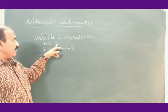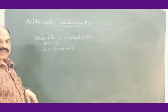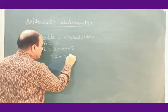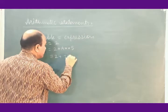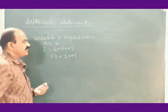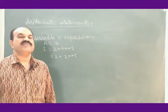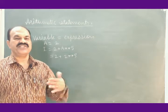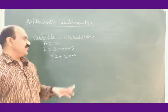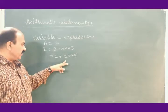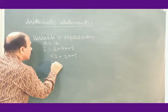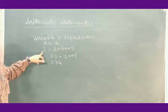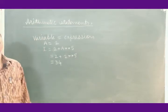The value of A provided in this program is 2. Then this will be 2 plus 2 to the power 5. 2 into 2 into 2, five times: 2 to 4, 4 to 8, 8 to 16, 16 to 32. So 2 to the power 5 is 32. 2 plus 32 is 34. This 34 is stored at the memory location whose name is I.